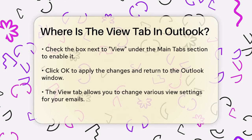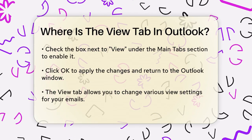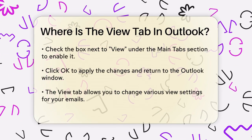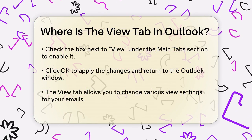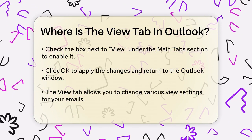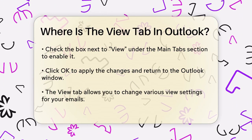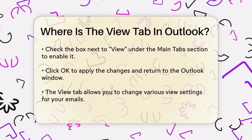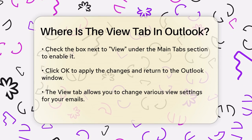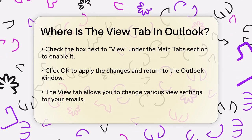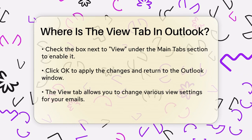However, if you don't see it, there's a simple way to enable it. Go to the File tab, then click on Options. In the Outlook Options window, select Customize Ribbon. Here, you'll see a list of all the tabs available in Outlook. Make sure the box next to View is checked under the Main Tabs section. If it's not checked, select it and click OK.